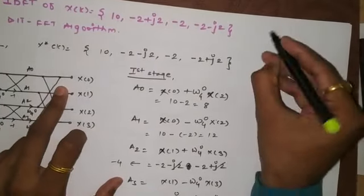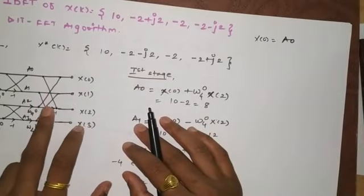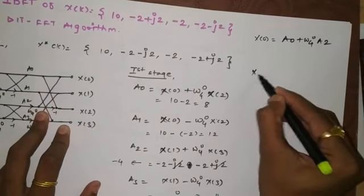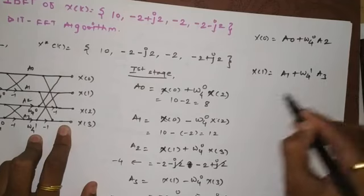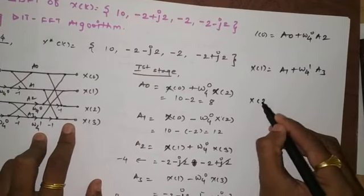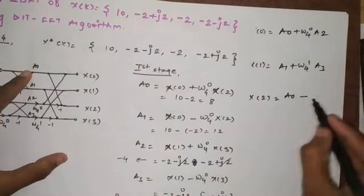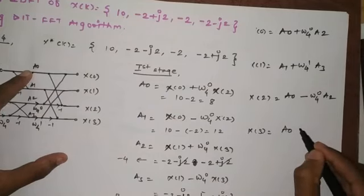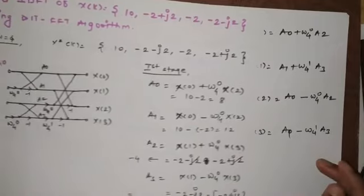For the second stage, we write the output equations: X(0) = a0 + omega_4^0 * a2; X(1) = a1 + omega_4^1 * a3; X(2) = a0 - omega_4^0 * a2; X(3) = a1 - omega_4^1 * a3. Now we substitute the first-stage values to compute the final outputs.